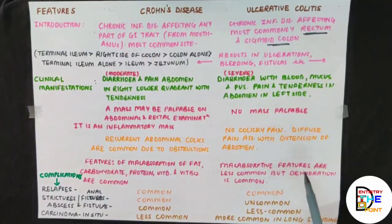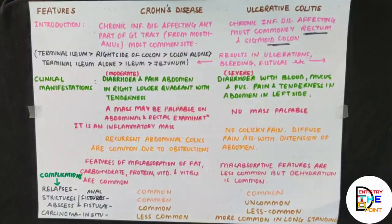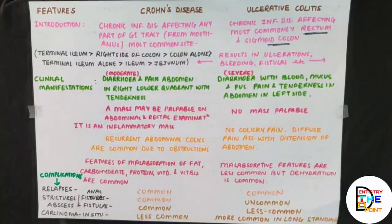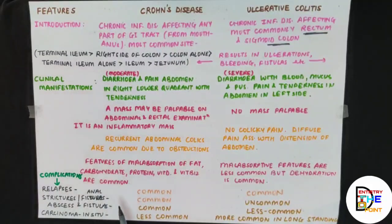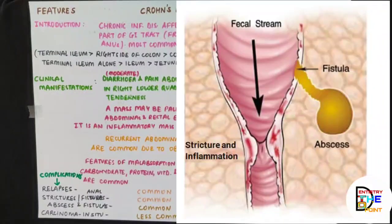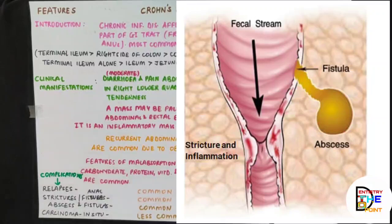Regarding complications: relapses and remissions are common in both Crohn's disease and ulcerative colitis. Moving on to strictures and anal fissures — strictures are abnormal narrowings or constrictions, which are common in Crohn's disease but uncommon in ulcerative colitis. Anal fissures are small tears in the mucosa of the anus that may occur with hard or large stools, also more common in Crohn's disease.